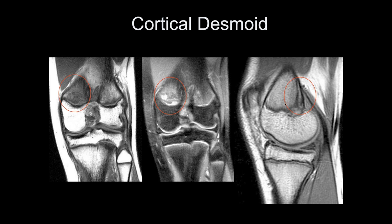Was MRI available then? No — I think all we had was x-rays. A well-known visiting musculoskeletal radiologist was being shown unknown cases. He diagnosed a cortical desmoid, but they came back saying it was a tumor. He said it's not a tumor. They said they had amputated the leg that morning. This is really a traction injury to the cortical and subcortical bone at the gastrocnemius insertion — a classic cortical desmoid that's a leave-alone lesion.